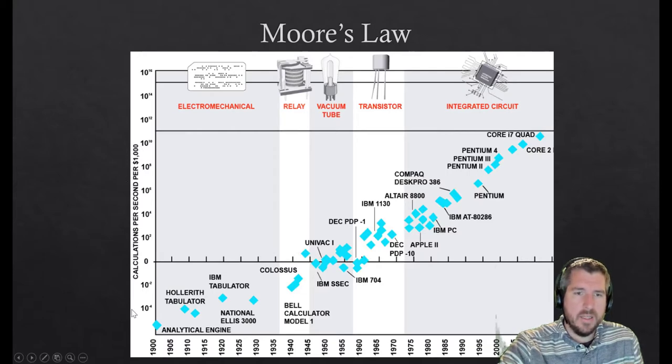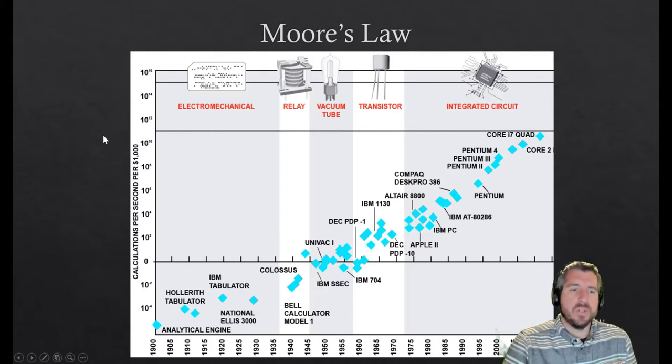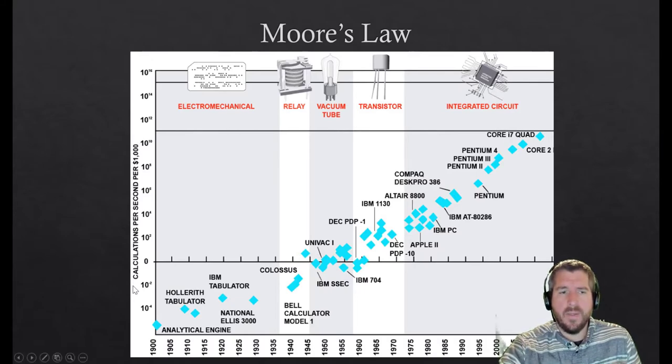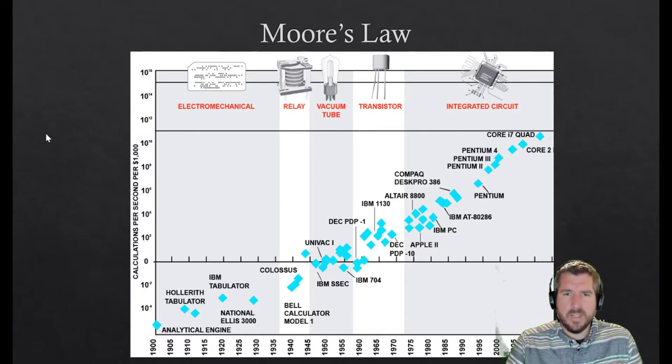This is another factor that you can take into account with Moore's Law. Instead of thinking about how many transistors you can fit on a chip, let's think about it in another way. Let's think about how many calculations per second per $1,000. That's what this y-axis is here. We have the calculations per second per $1,000.